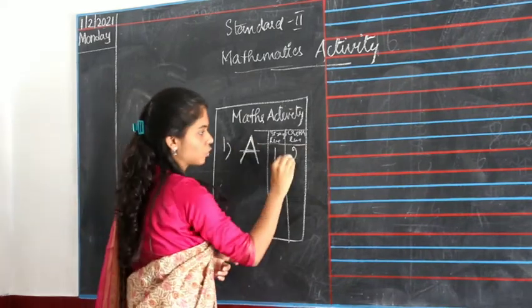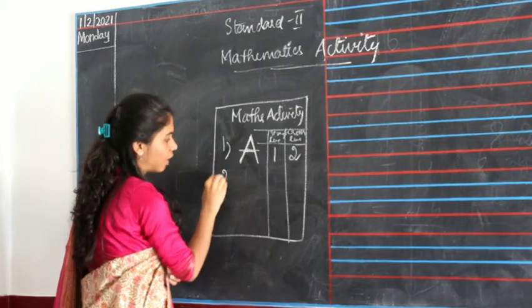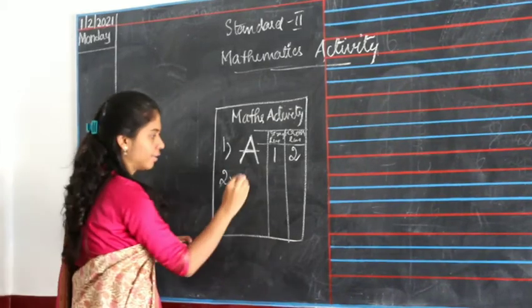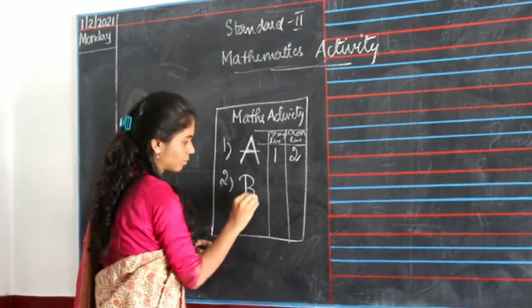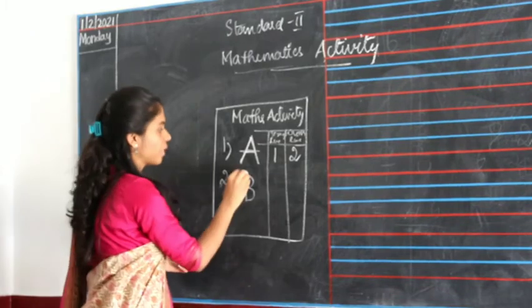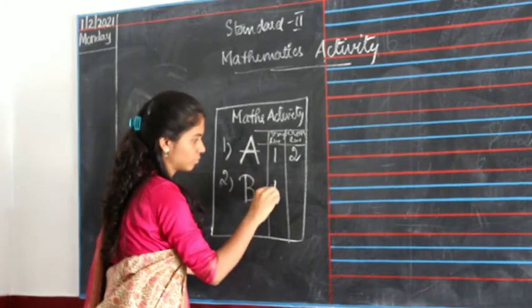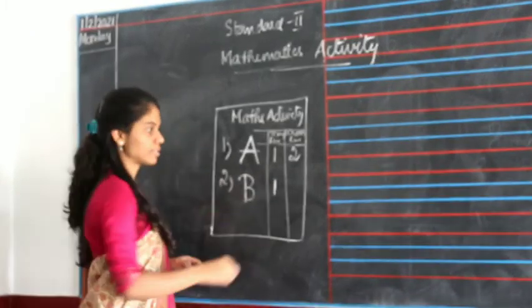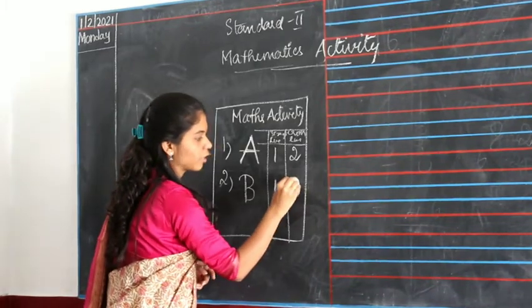And down that, you have to put two and write alphabet B. Now you can see there is one straight line here and there is no cross line here, so you have to put zero.